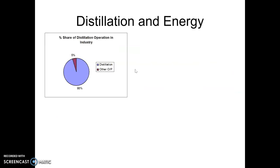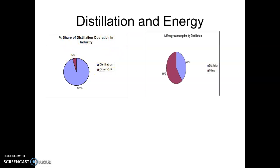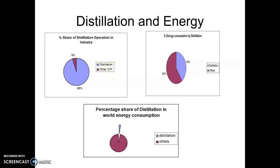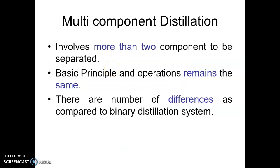Looking at some data from about 10–15 years ago: approximately 5% of operations in industry are governed by distillation systems. About 40% of energy in industry is consumed by distillation systems. Considering overall global energy consumption — including everything from fans to mobile charging — distillation's share may be around 1–2%, but it is very clear that distillation is a highly energy-intensive process, and saving energy in distillation columns would be very helpful.